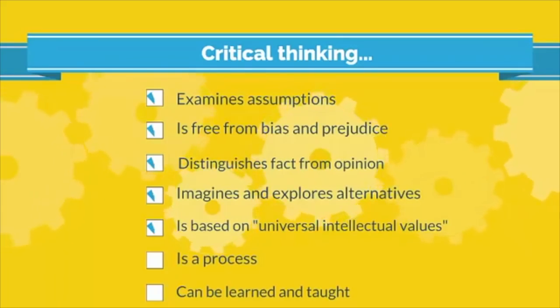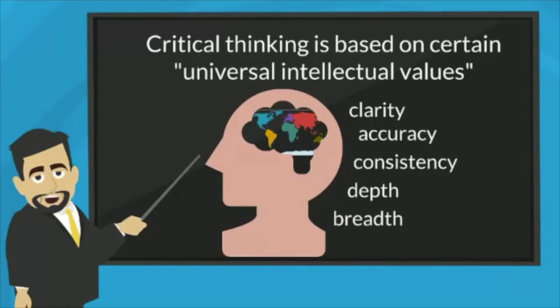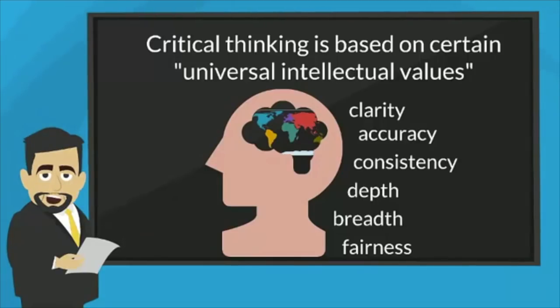5. Critical thinking is based on certain universal intellectual values. Clarity: We must think clearly. Accuracy: We must not base our thinking on incorrect information. Consistency: If we apply a rule to one context, we must apply that rule to all similar contexts. Depth: Considering only surface information is not enough. Breadth: We must consider a wide range of information. Fairness: We need to be fair. All of these require careful thinking, time, and a reduction of bias.